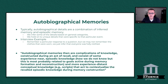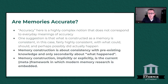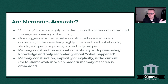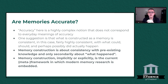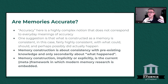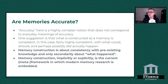You can see how change can take place in the past or in our history simply because of how memory construction works — really fascinating. So then: are memories accurate? What the authors conclude is that it's really complex — it doesn't fit into an everyday definition of accuracy. We can't say it's true or false, right or wrong, because it's based on inference and construction. One suggestion is that what is constructed as memory is fairly highly consistent with what could, should, or perhaps possibly did actually happen.